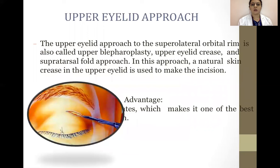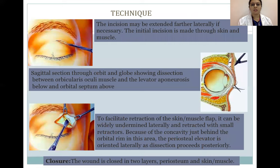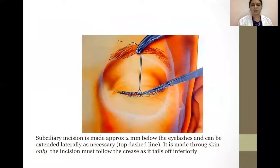The upper eyelid approach to the supralateral orbital rim is also called the upper blepharoplasty, upper eyelid crease, or supratarsal fold approach. The natural skin crease in the upper eyelid is used to make the incision, which may be extended farther laterally if necessary. The incision is made through the skin and muscles. Dissection proceeds between the orbicularis oculi muscle and levator aponeurosis below and the orbital septum above. The skin-muscle flap can be widely undermined laterally and retracted with small retractors. Closure is in two layers.